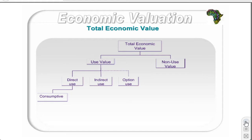Examples of consumptive direct use values are timber and coal. Direct use values can also be non-consumptive — they can be enjoyed without there being less for anyone else. Examples of these are picnic spots, hiking trails, and a view of a mountain. Indirect use values are values associated with the ecosystem functioning of the environment. Examples are carbon sequestration, the nutrient cycle, and water purification. Option use value is related to the future use of the environment. Although individuals are not actively using the resource, they may be willing to pay a certain amount to ensure that certain environmental goods are available for their own possible use in the future.